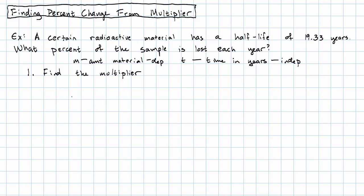So, the amount of the material will be some starting amount, we don't know, but we're going to multiply by a half. How many times will we multiply by a half? Well, once every 19.33 years.